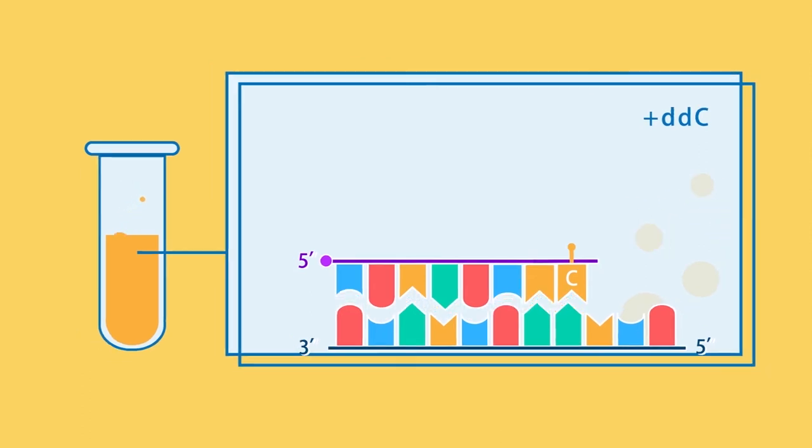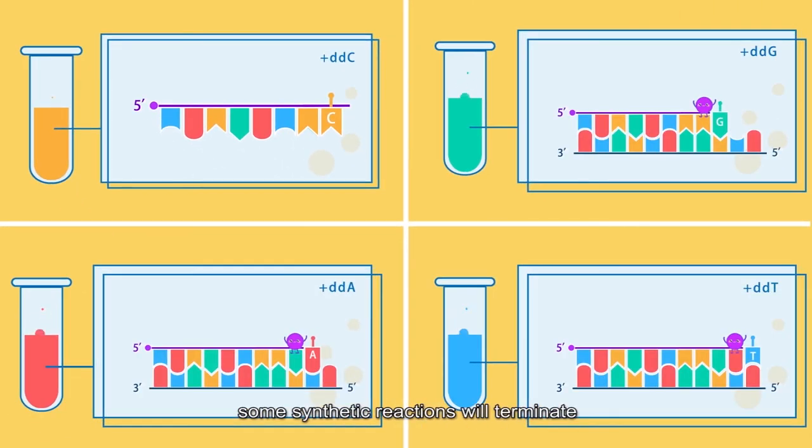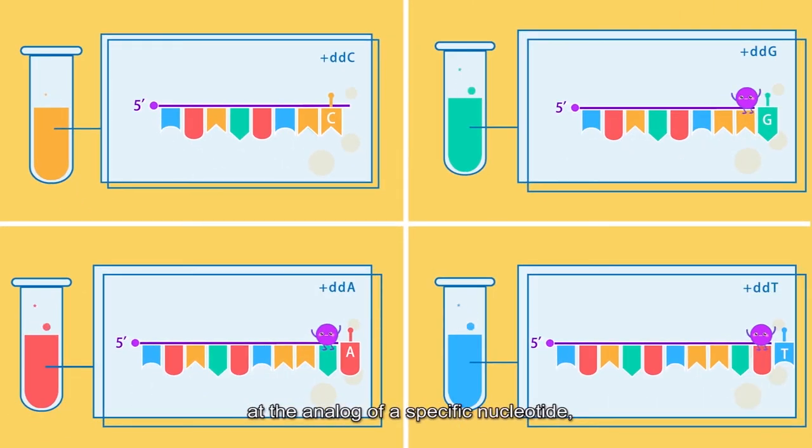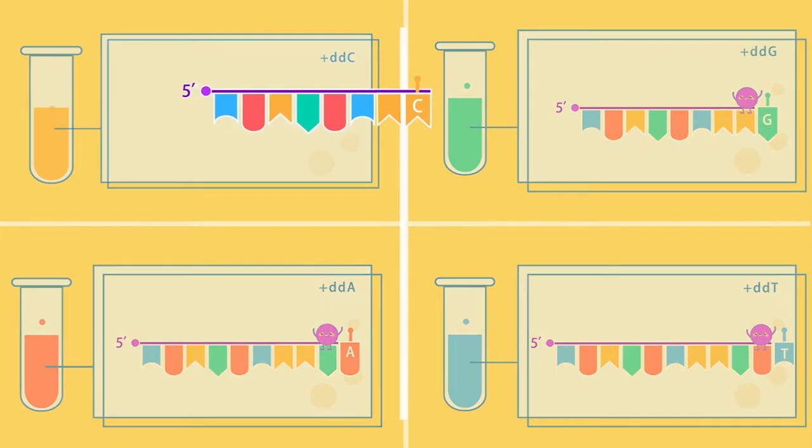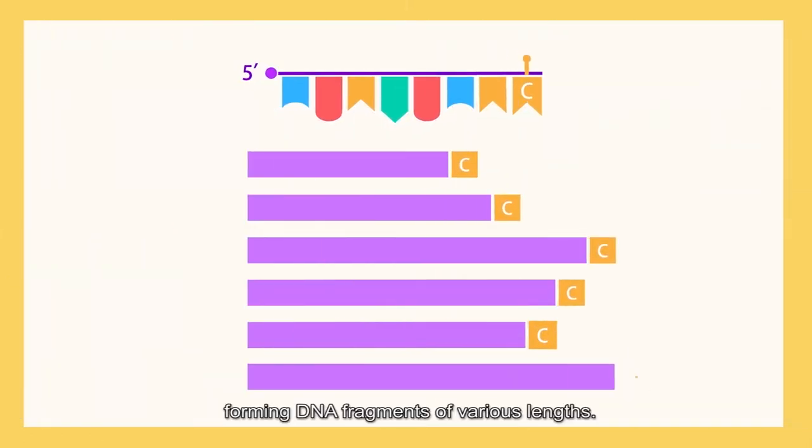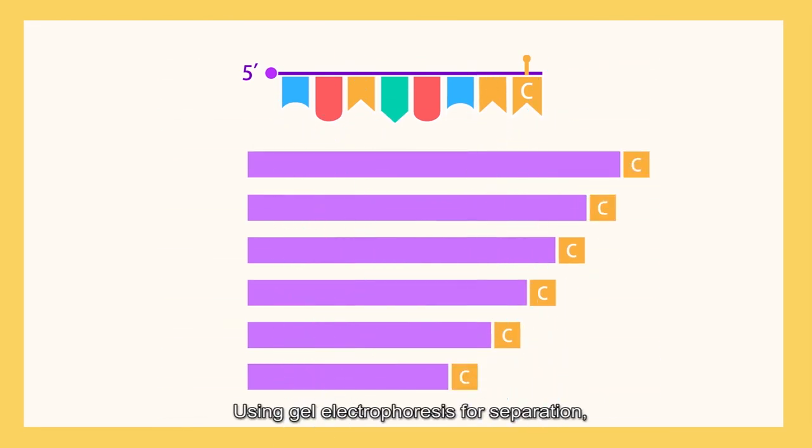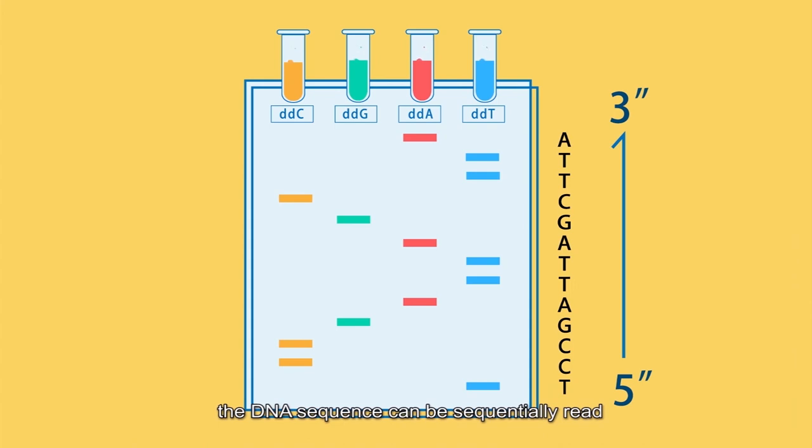According to this principle, some synthetic reactions will terminate at the analog of a specific nucleotide, forming DNA fragments of various lengths. Using gel electrophoresis for separation, the DNA sequence can be sequentially read from gel bottom to top.